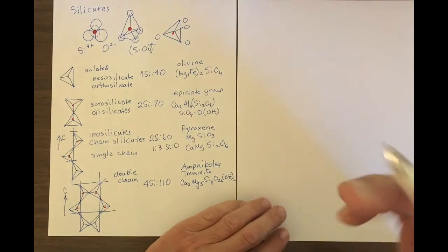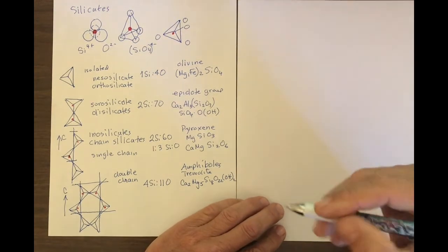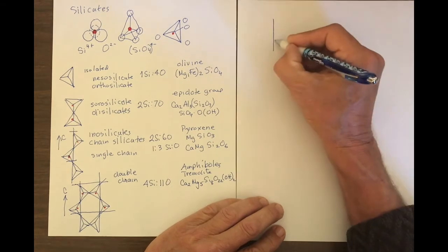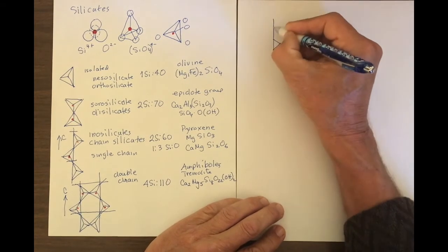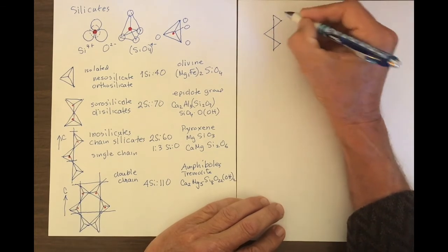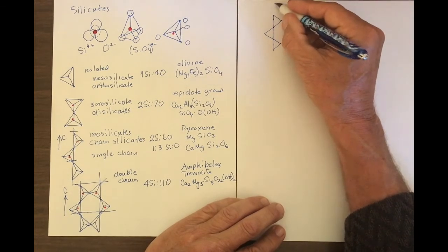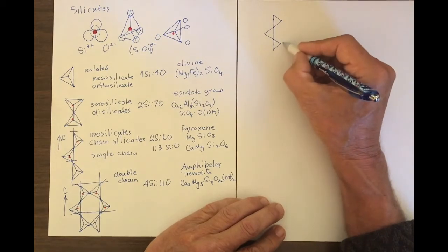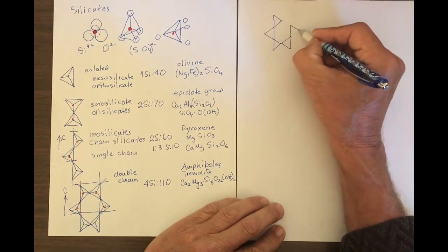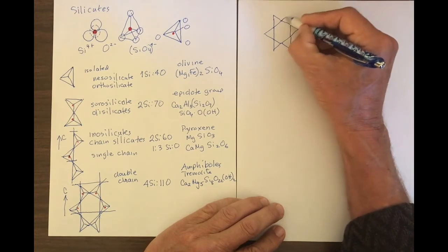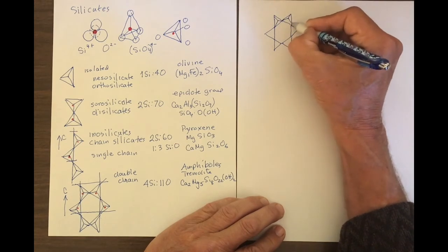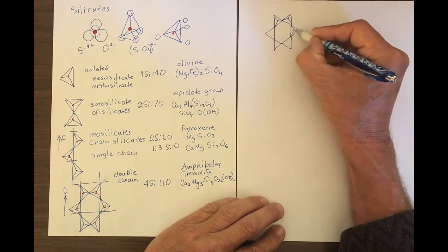Now we're going to look at ring silicates, which are quite simple. They look like the same sort of linking — we start with a chain of tetrahedra, and then instead of extending up or down, we link this tetrahedra to one over here to form a six-membered ring.